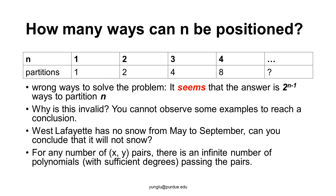To explain why it is not valid to answer the question by observation, let's consider how the observation may work. We have a few pairs of values: when N is 1 there is 1 way, when N is 2 there are 2 ways, when N is 3 there are 4 ways, when N is 4 there are 8 ways. For any number of pairs of values, we can always find an infinite number of polynomials with sufficient degrees passing through these pairs. This is why we must not generalize from observations — mathematically there are infinite possibilities.